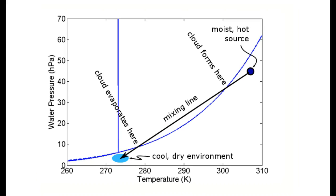The next process is mixing. Mixing clouds usually form when unsaturated, warm, moist air from a source is mixed into the unsaturated, colder, drier environmental air.